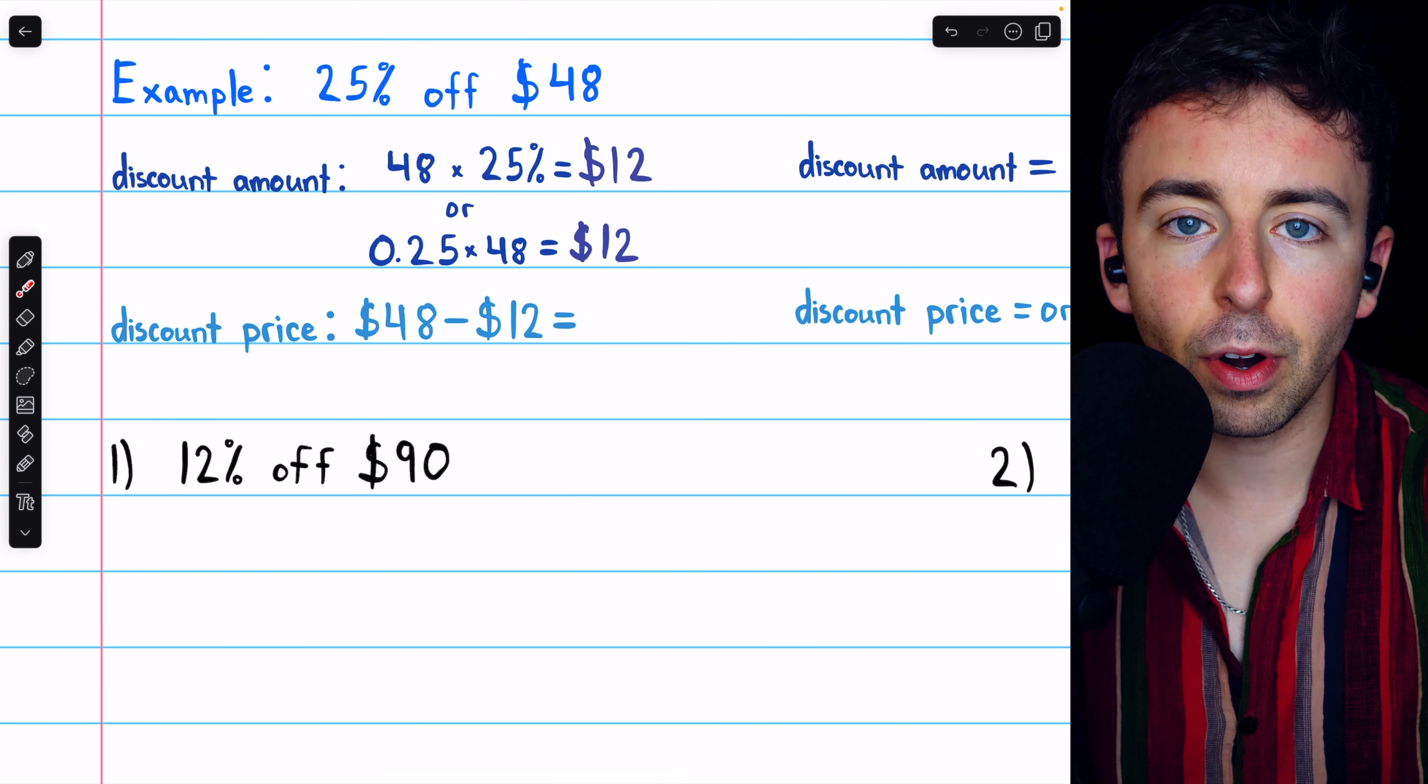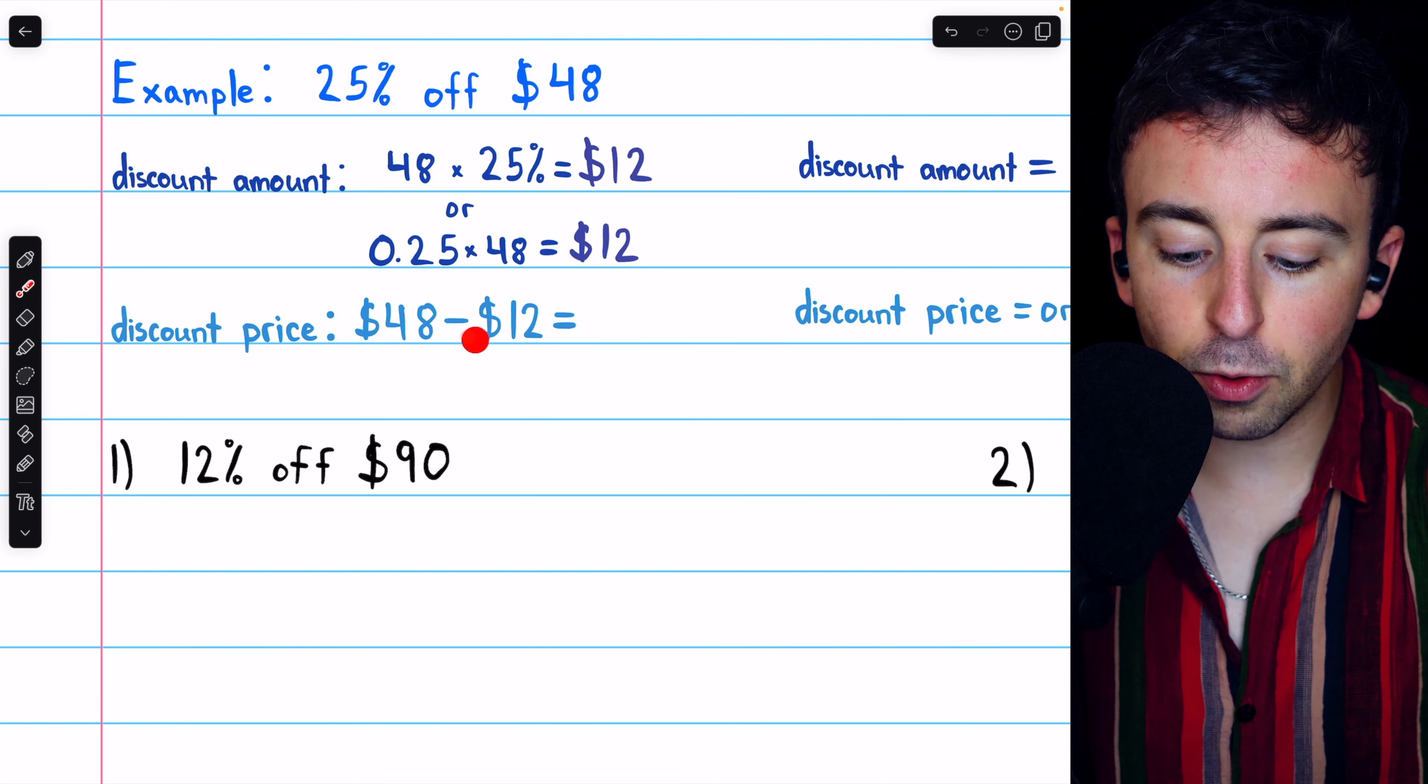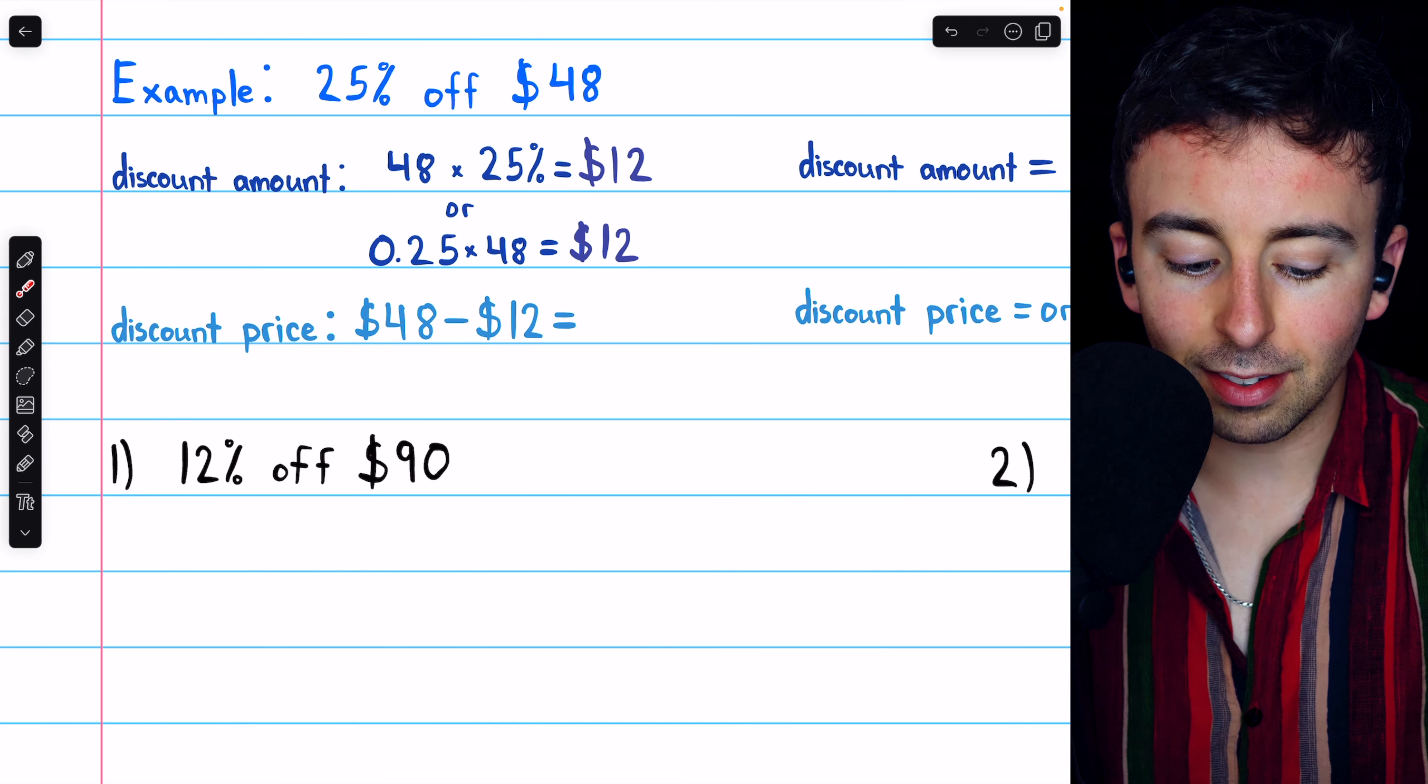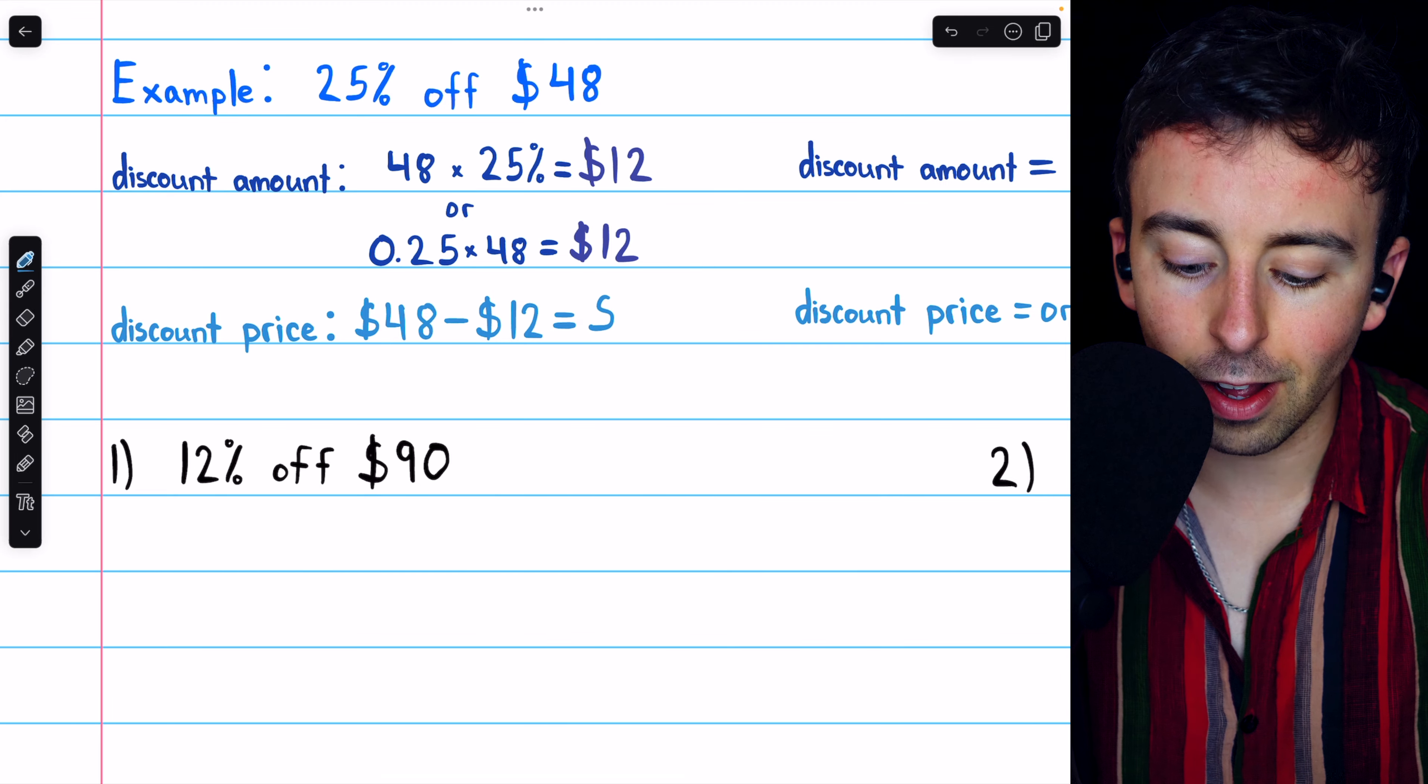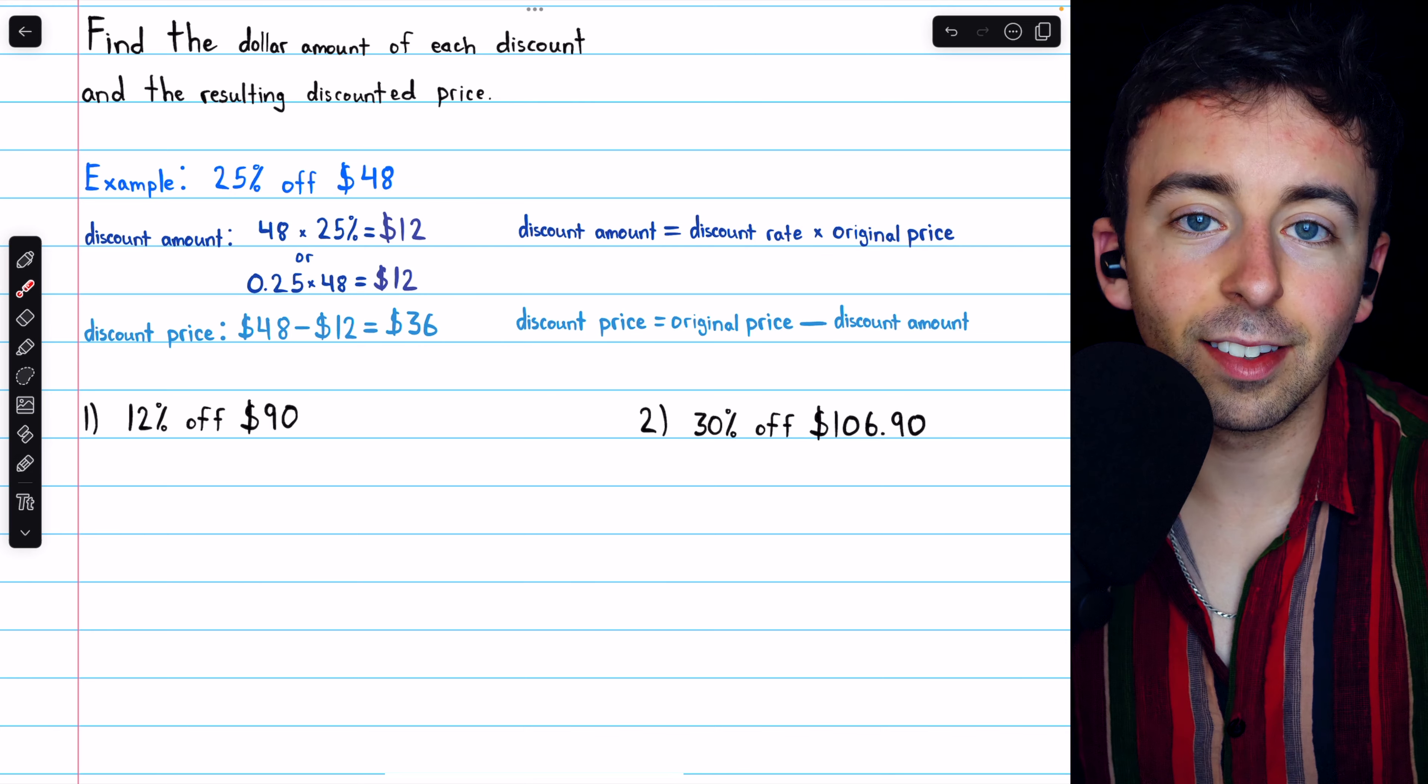So then the question is, what is the discount price? Well, take the original price, $48, and subtract the amount being discounted. If $12 are being discounted, then the discount price is $36. So that's just taking the original price and subtracting that discount amount.